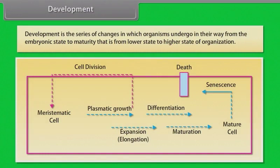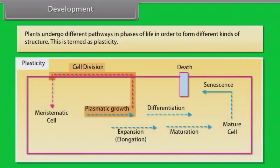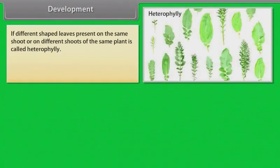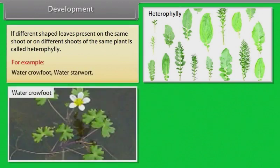Development is the series of changes in which organisms undergo from the embryonic state to maturity — from a lower state to a higher state of organization. Plants undergo different pathways and phases of life in order to form different kinds of structures; this is termed plasticity. If differently shaped leaves are present on the same shoot or on different shoots of the same plant, it is called heterophylly. Examples include water crowfoot and water starwort.